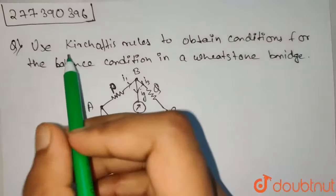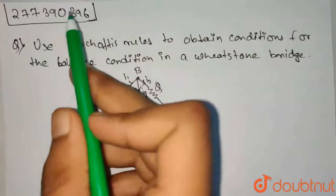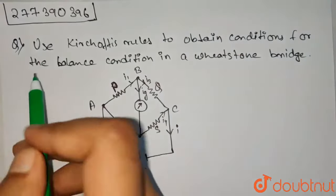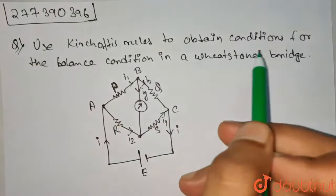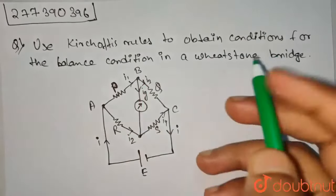So guys, this is the answer for question ID 277-390-396. What was given in the question? Use Kirchhoff's rule to obtain the condition for the balanced condition in a Wheatstone bridge.